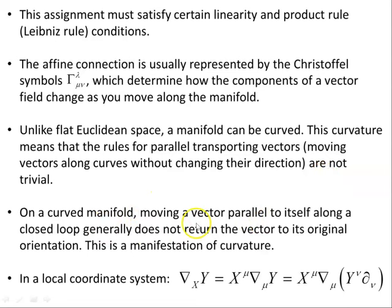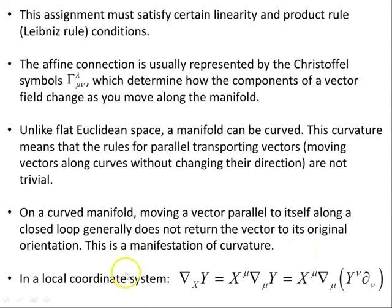Unlike flat Euclidean space, a manifold can be curved. This curvature means that the rules for parallel transporting vectors — moving vectors along curves without changing their direction — are not trivial. On a curved manifold, moving a vector parallel to itself along a closed loop generally does not return the vector to its original orientation. This is a manifestation of curvature.